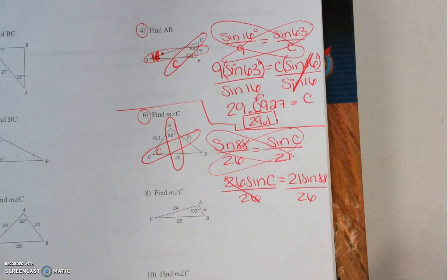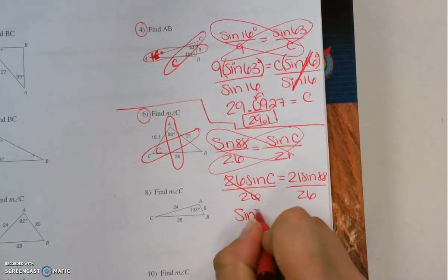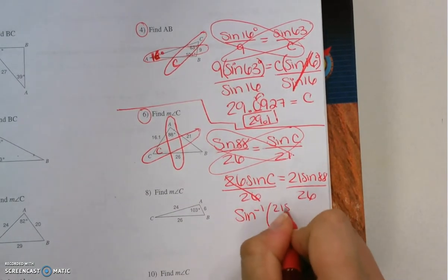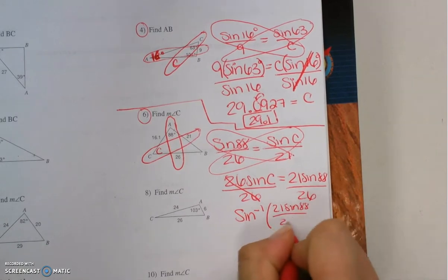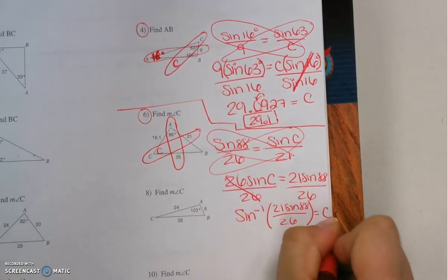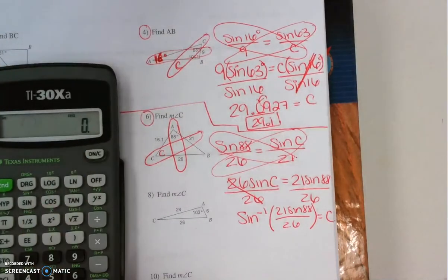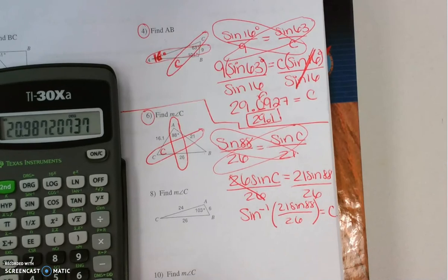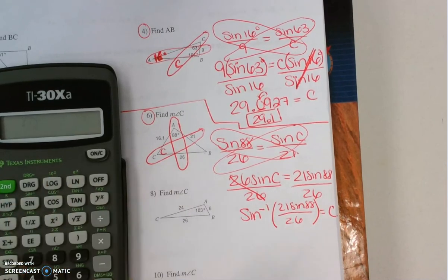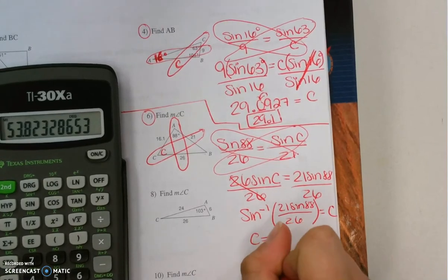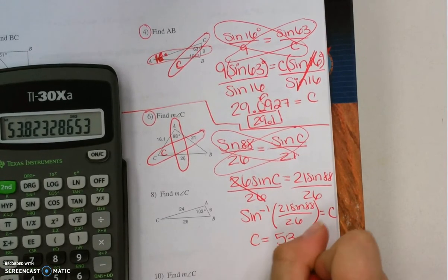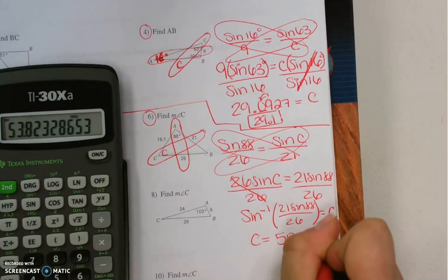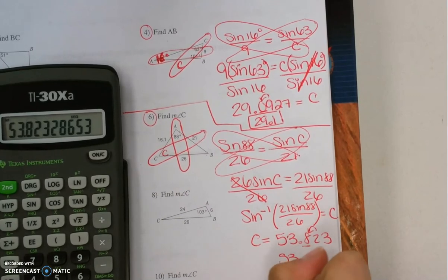To solve for an unknown angle, we need to use the inverse. The inverse sine of 21 sine 88 over 26 equals angle C. Pick up our calculator. 88 sine times 21 equals divided by 26 equals second sine. C equals 53.823 and so on. So it's going to be 53.8 degrees.